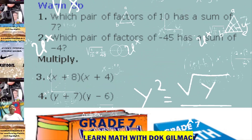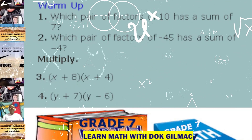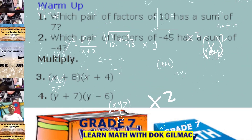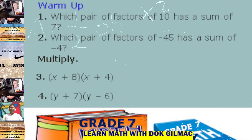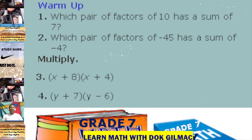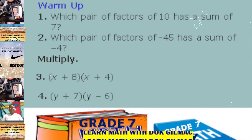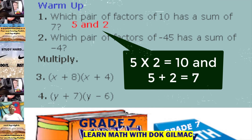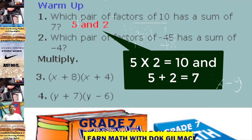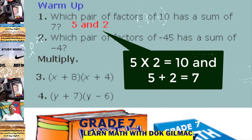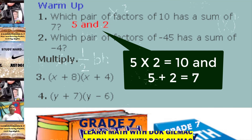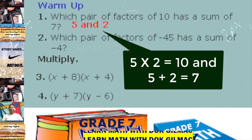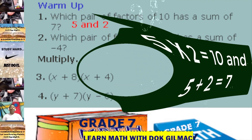Number 1. Which pair of factors of 10 has a sum of 7? That's right! It's 5 and 2. 5 times 2 is 10, and 5 plus 2 is 7.